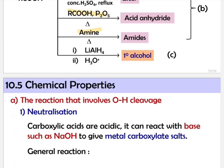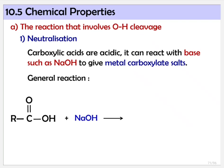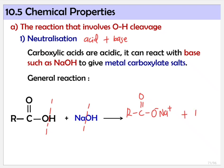We want to go through reactions one by one. First we start with neutralization. This reaction is called neutralization because it occurs between acid and base — the acid we use is carboxylic acid and the base is NaOH. Carboxylic acids are acidic, so they can react with a base. Just like reacting any acid with a base, we get salt and water. Hydrogen leaves here, OH leaves from NaOH, forming H2O. So the product is O⁻Na⁺ plus H2O.